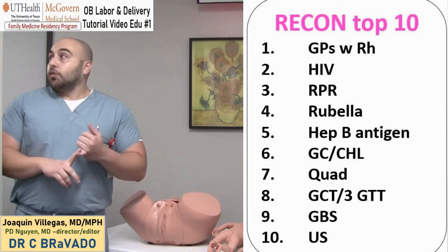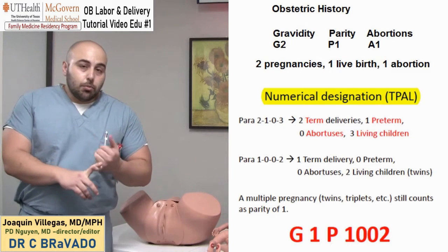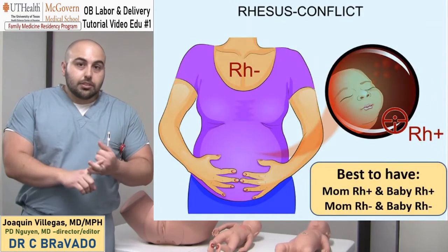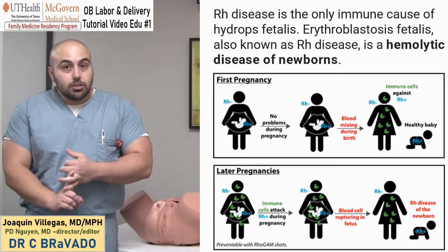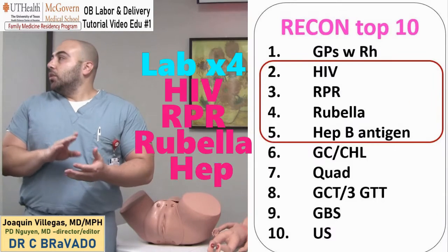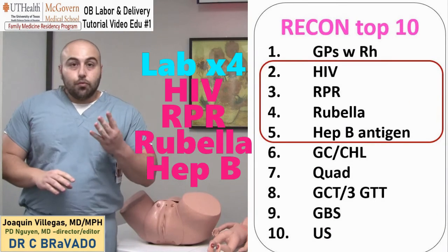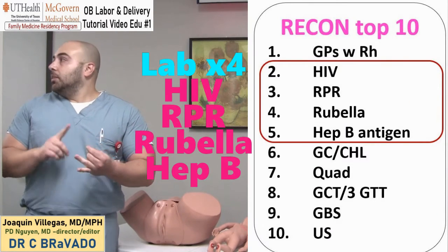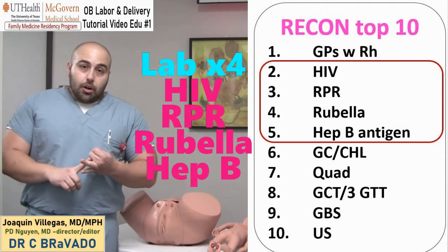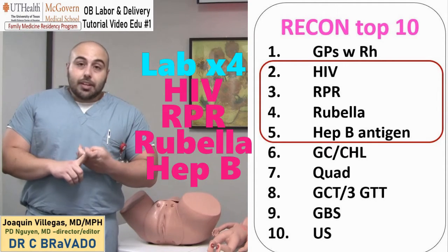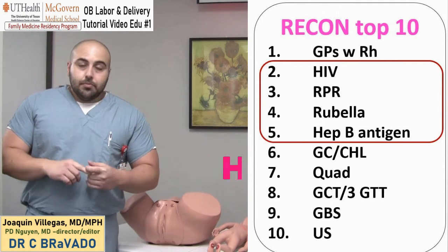The first one is the GPs — basically gravida and para, so it's the first delivery or multi-parity. We also look for the four main labs: HIV, RPR, rubella, and hepatitis B.